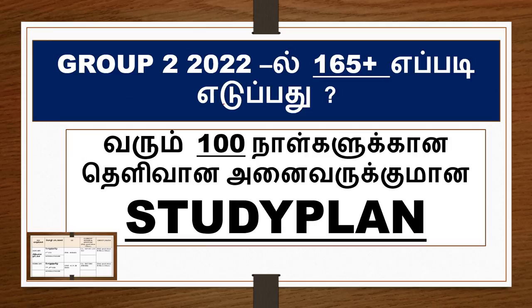Hi friends, Group 2 2022 — we have a 165 plus target. We have a study plan. We have 10 days in general, covering February, March, April, May — 100 days calculated.